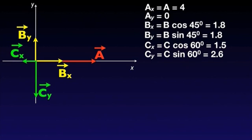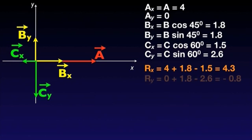We can now proceed and calculate RX. Of course, we have to take into account the directions of the vectors we are adding. RX is 4.3. Similarly, RY is minus 0.8.